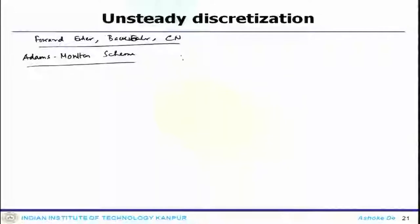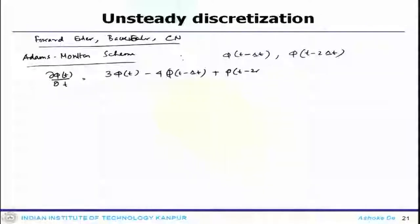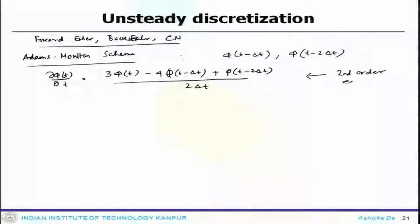The Adams-Moulton scheme uses the value at t minus Δt and the value at t minus 2Δt — values from two steps behind the present value. Once we equate them to find out the first derivative of the variable, that is written as 3φ_t minus 4φ_{t-Δt} plus φ_{t-2Δt} divided by 2Δt, which gives a second order expression.